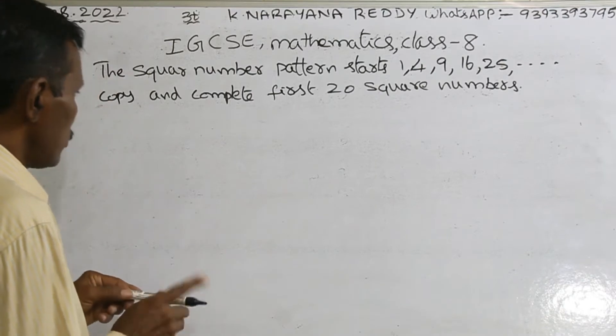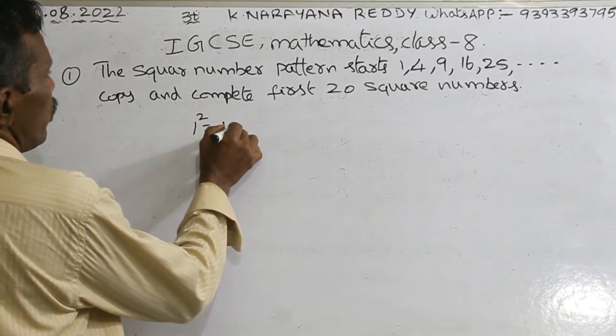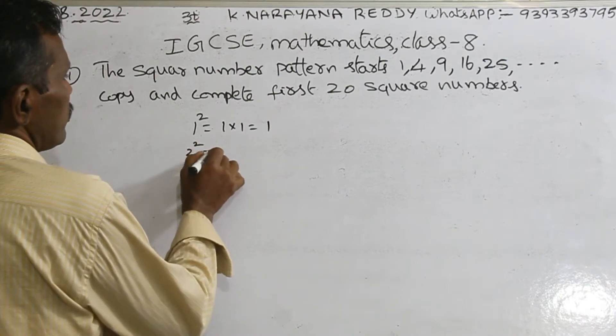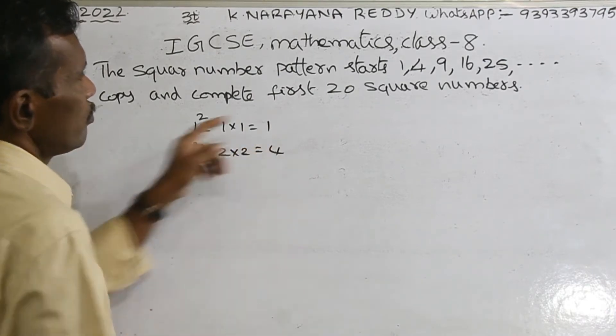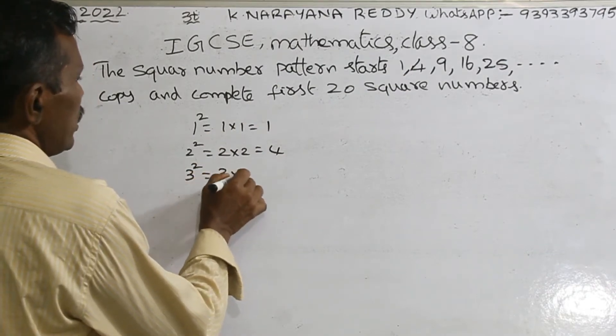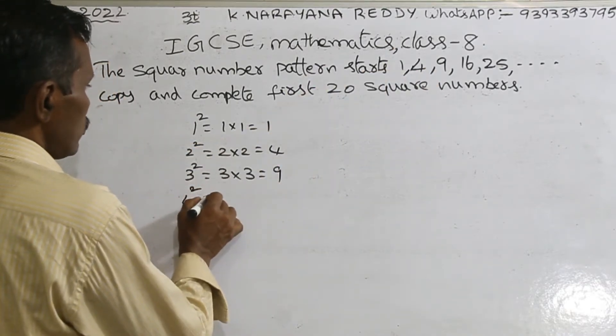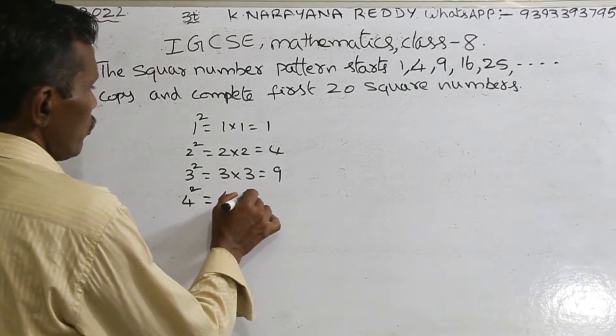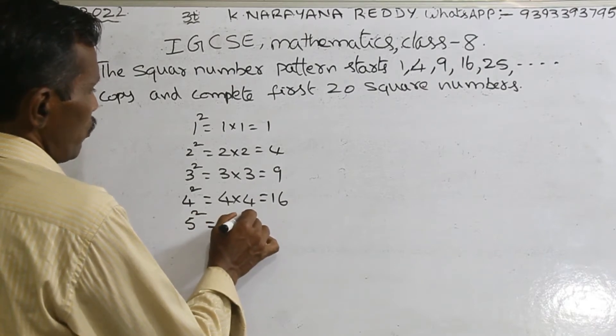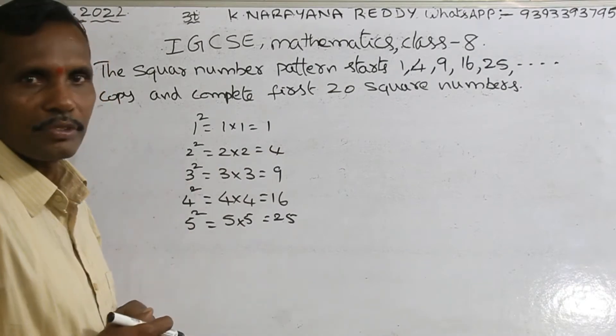See here. 1 square: 1 into 1 equals 1. 2 square: 2 into 2 equals 4. 3 square: 3 into 3 equals 9. 4 square: 4 into 4 equals 16. 5 square: 5 into 5 equals 25. These are the given five.